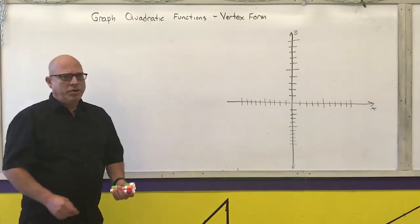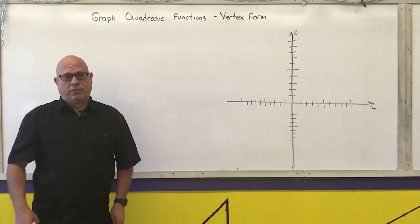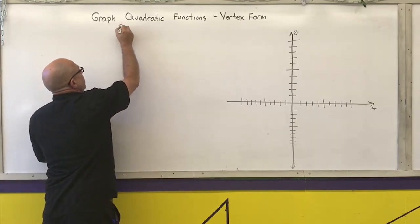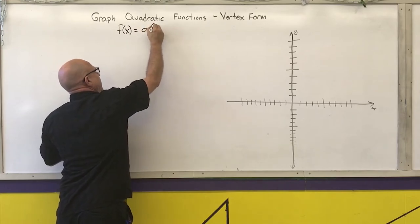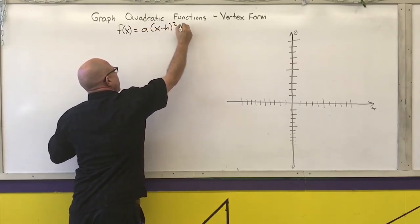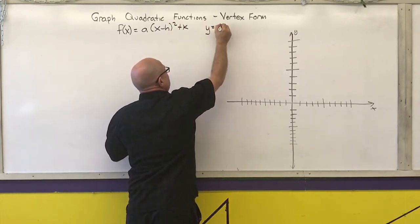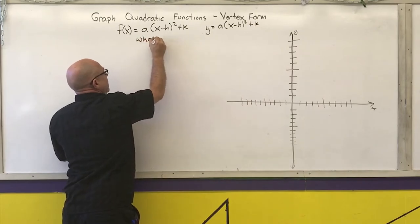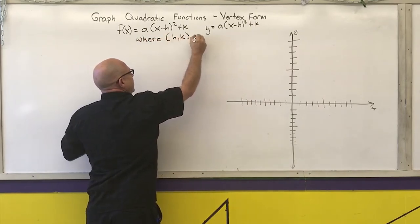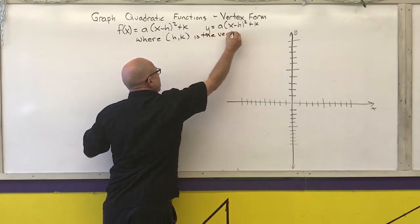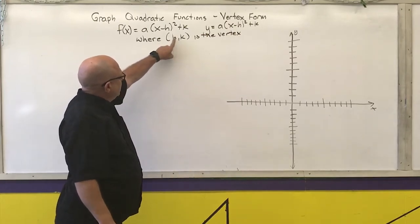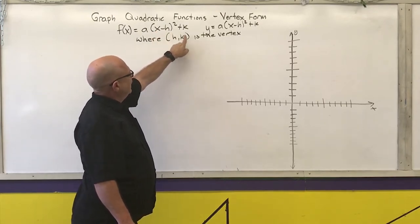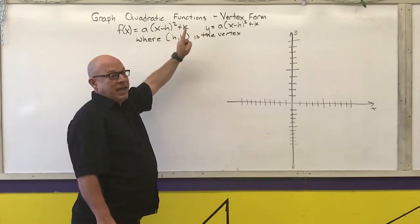The next form of quadratic function we're going to learn how to graph is called vertex form. A quadratic function is in vertex form when it looks like this: f of x equals a times the quantity x minus h squared plus k, where the point h comma k is the vertex. The x-coordinate of the vertex is the opposite of the number inside the parentheses, and the y-coordinate is the same as the number added outside.